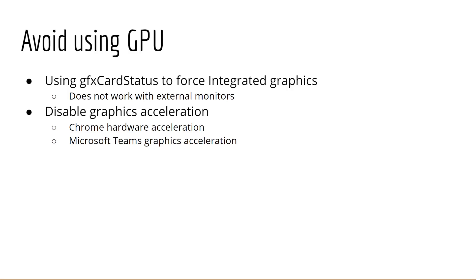Another tip to avoid using the GPU — which applies to people who have either a dedicated or integrated GPU — is to disable graphics acceleration. Many applications such as Chrome and Microsoft Teams have options to enable or disable graphics acceleration. While graphics acceleration can be helpful for certain tasks, offloading work to your GPU can often cause more heat to be generated, and this is really an application-by-application basis. I noticed this especially with Microsoft Teams, but I have fewer problems with Google Chrome and actually leave Chrome's hardware acceleration on.